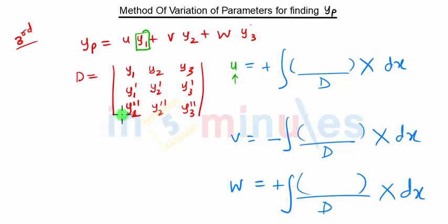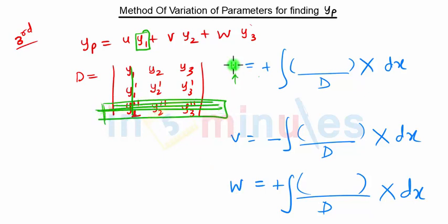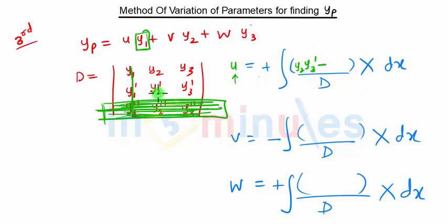To find u: since u is with y1, we ignore the column of y1 in the determinant. To find parameters u, v, and w, we always ignore the second derivative row. So ignoring y1's column and the second derivative row, we get y2·y3' minus y2'·y3 as the numerator for u.